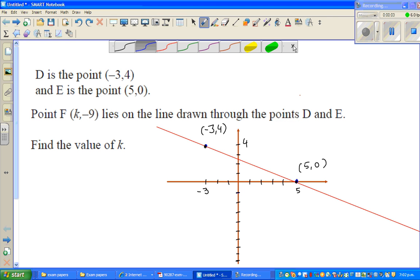In this video, I'm going to do one example of coordinate geometry where you have to find the coordinate of a point. So let's read the question. D is a point negative 3, 4 and E is a point 5, 0.